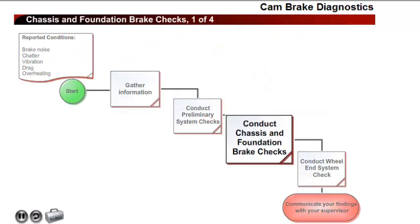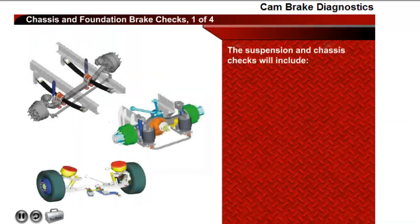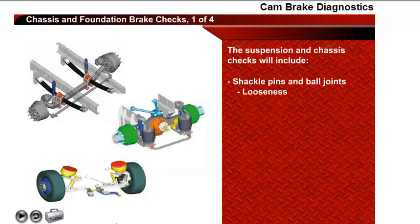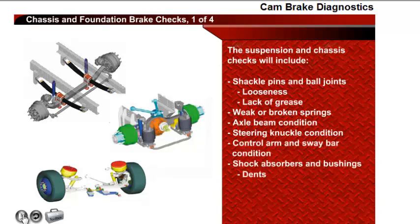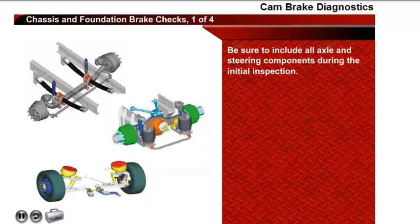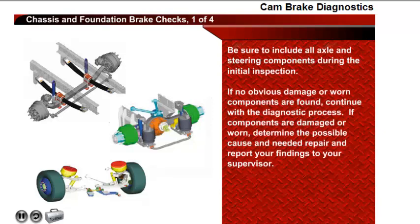If the truck tracks in a straight direction when the brakes are not applied, but does pull when the brakes are applied, complete a visual inspection of the suspension and chassis components to ensure there are no obvious worn or damaged components. Suspension and chassis checks will include checking shackle pins or lack of grease, weak or broken springs, axle beam condition, steering knuckle condition, control arm condition, sway bar condition, and shock absorbers for dents, leaks, and bushings for wear or looseness. Be sure to include all axle and steering components during the initial inspection. If no obvious damage or worn components are found, continue with the diagnostic process. If components are damaged or worn, determine the possible cause and needed repair and report your findings to your supervisor.